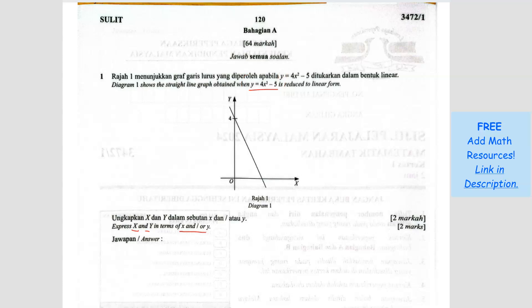See, the thing is, you notice that y, this is the equation, y equals 4x² minus 5. And what we notice is that this intercept here is what? The y-intercept is actually 4, right? So that means the 4 is actually here.